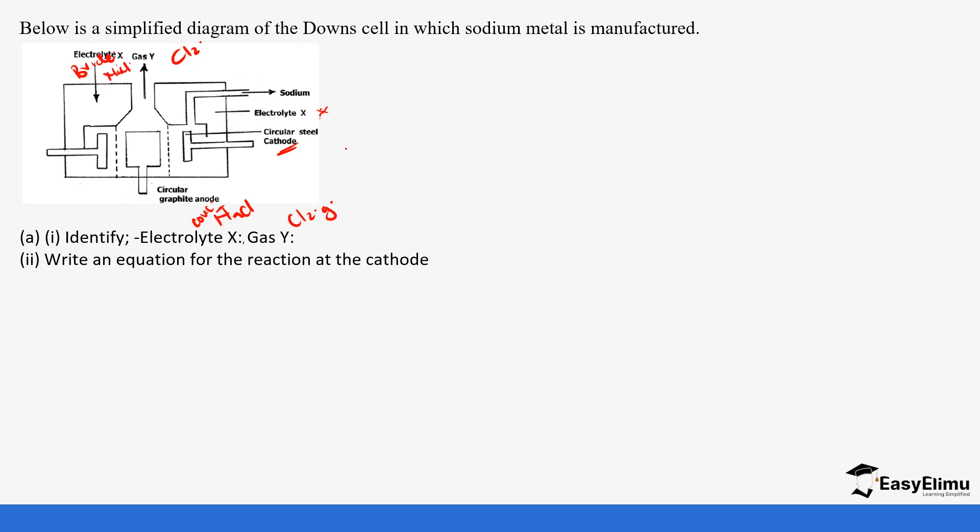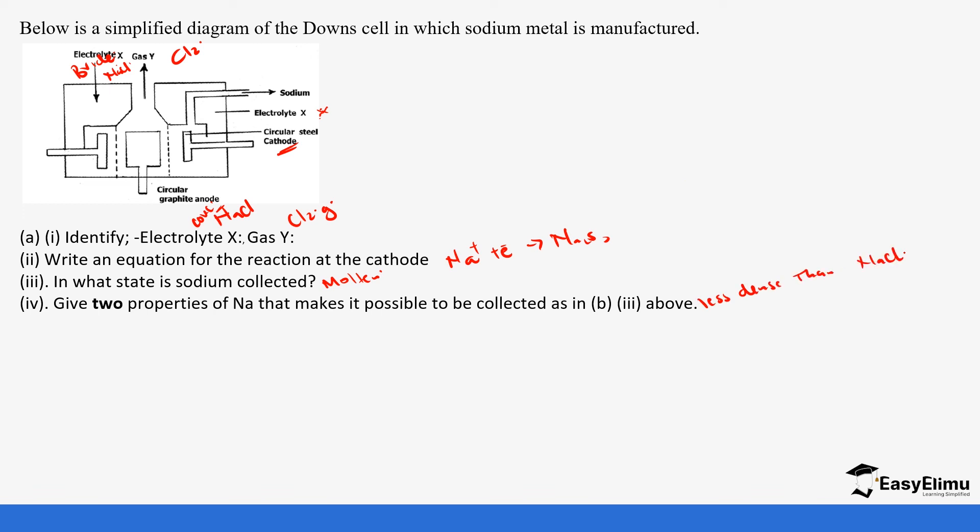Write the equation for the reaction at the cathode. At the cathode, the sodium ions are discharged. The sodium ions gain electrons to form sodium solid: Na+ + e- → Na. In what state is sodium collected? It's collected molten. Give two properties of sodium that make it possible to be collected: it's less dense than sodium chloride and it has low melting points, that's why it floats.